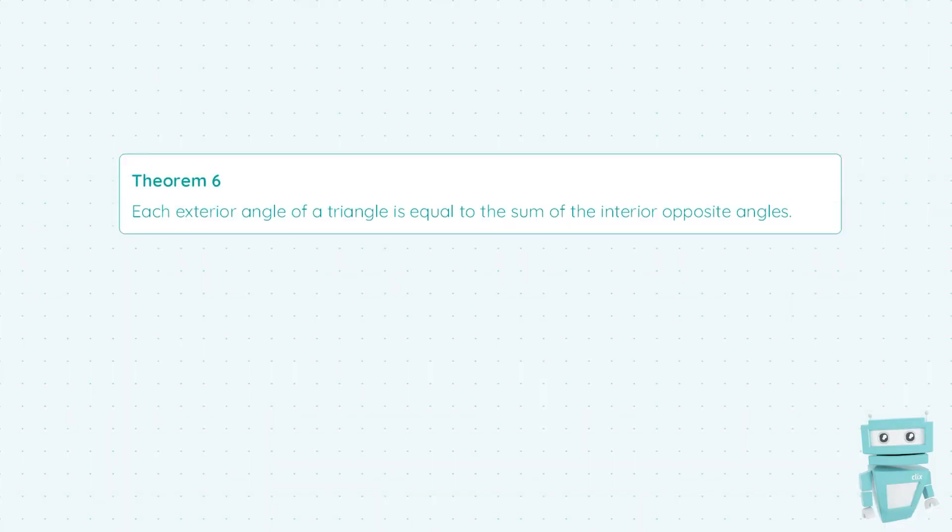Hi guys, Sean here from StudyFix, and in this video we're going to be looking at Theorem 6, which states that each exterior angle of a triangle is equal to the sum of the interior opposite angles.